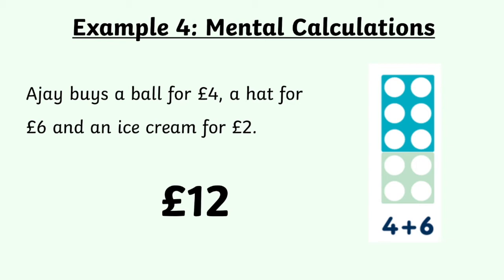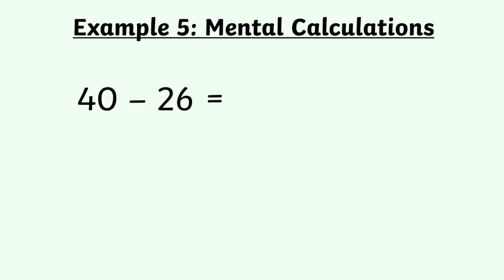Can you see how, rather than drawing things out or counting on, if we can spot straight away that 6 and 4 make 10, the calculation becomes very straightforward? Let's look at one more example before your turn: 40 take away 26. Now this one's a bit more tricky, and there are lots of different ways of working it out. But I want to show you how you can use your number bonds to 10 again to work this one out.